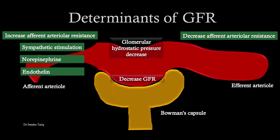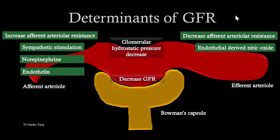Conversely, if resistance at the level of the afferent arteriole decreases, pressure increases because of increased flow of fluid into the glomerulus, and this buildup of pressure increases GFR. Factors that decrease afferent arteriole resistance include endothelial-derived relaxing factor — also called nitric oxide — and various prostaglandins. These cause vasodilation, leading to increased flow of fluid into the glomerulus, buildup of more pressure at the glomerular capillaries, and ultimately an increase in GFR.